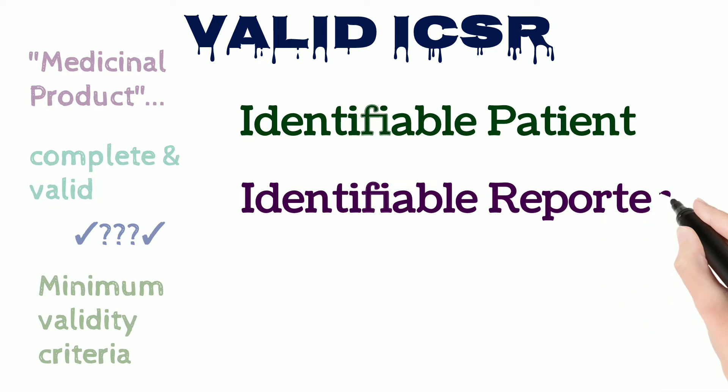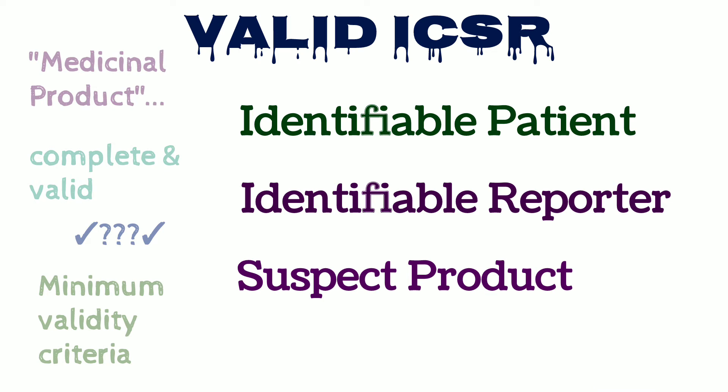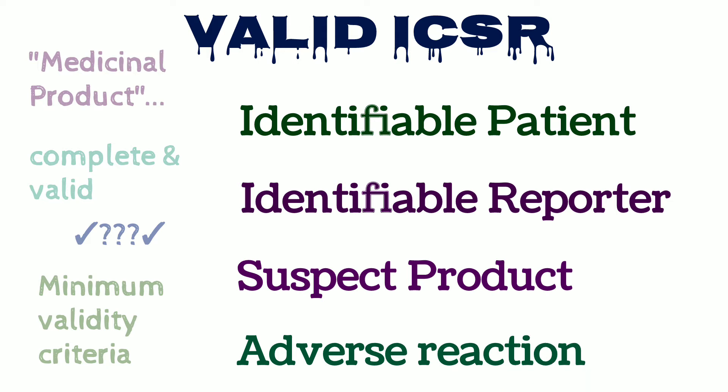Second is identifiable reporter — a person who reports adverse reactions and facts. Third is suspect product; only the products specified as suspect by the reporter are entered as suspect product. The next element is adverse reaction, which should consist of signs or symptoms, or represent a codable medicinal concept.